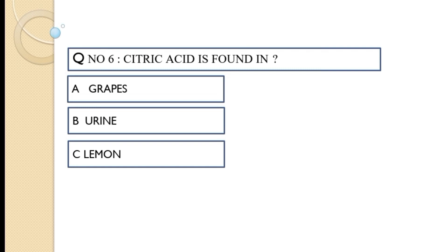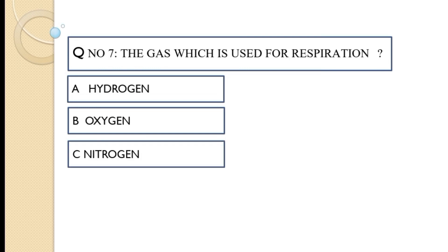Question number six: citric acid is found in — option A: grapes, option B: urine, option C: lemon. The correct answer is option C, lemon.